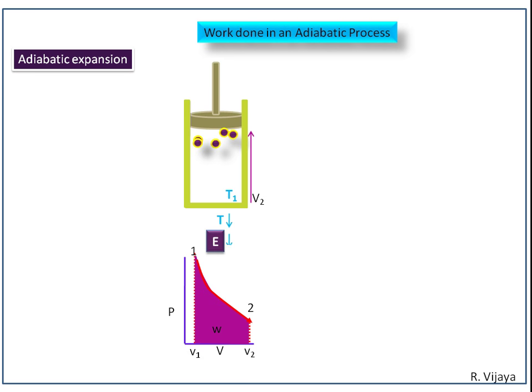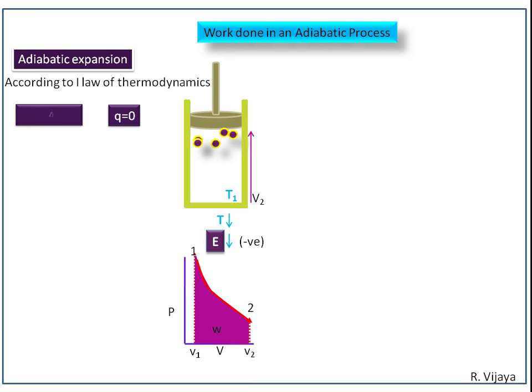So energy also decreases, meaning the energy value should be negative — that is, the change in internal energy should be negative. Since it is an adiabatic process, Q is equal to zero, meaning there is no heat transfer. According to the first law of thermodynamics, change in internal energy is equal to Q plus W. Since Q is equal to zero and energy is negative,